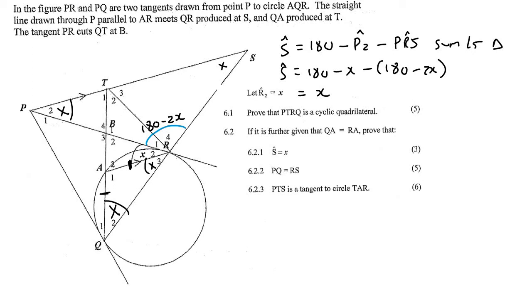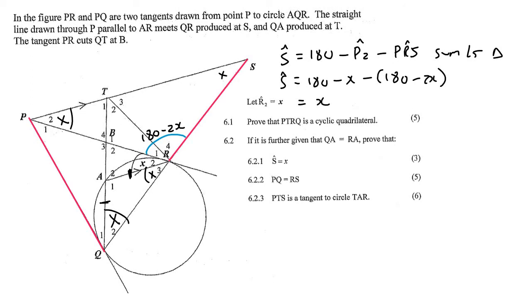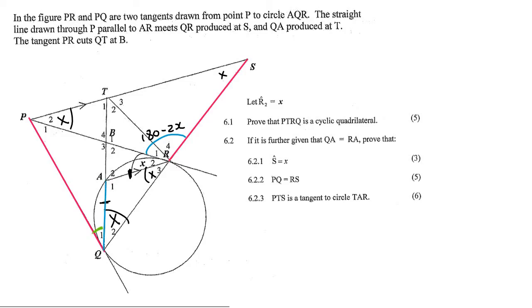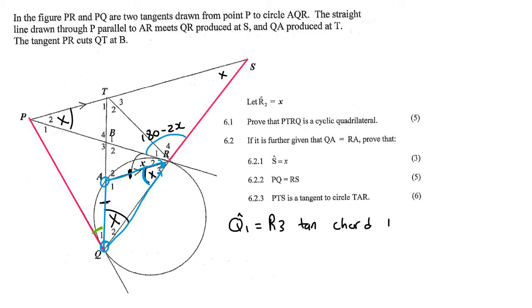The next question, for five marks, wants us to prove that PQ is the same as RS. That looks unusual because they're not part of the same triangle, so we can't simply say isosceles. We can see that Q1 is in between the tangent and the chord, so we can use the tan-chord theorem. Put your finger on the edges of the chord and make the two circles come together — they come together at R3. So Q1 will be the same as angle R3 because of the tan-chord theorem, meaning Q1 is also equal to x.